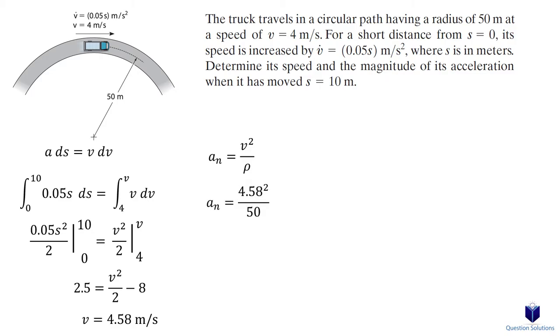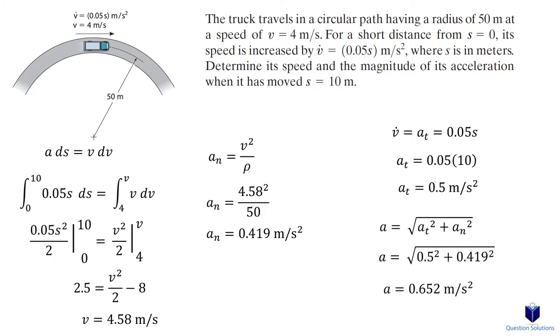Now we need the other component of acceleration, which is the tangential acceleration. For that, all we need to do is find the acceleration at 10 meters using the given equation in the question. The magnitude of acceleration can be found by squaring both components and then taking the square root. So those are our answers.